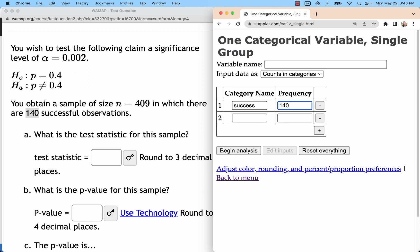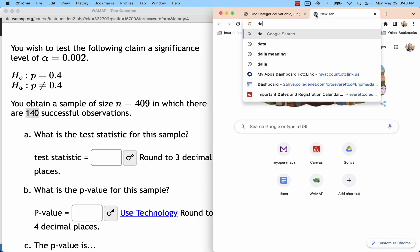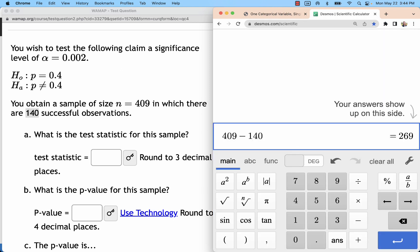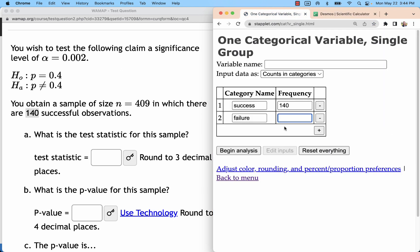So, this is 140 successes. That will leave us with 409 minus 140 failures, so that's 269 failures.